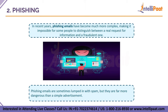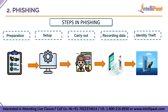Phishing consists of five steps: preparation, setup, carry out, recording the data, and identity theft. The first step is preparation or planning — the phisher must decide which businesses to target and how to obtain email addresses from those businesses' customers. The second step is setup — after deciding which firm to imitate and who their victims will be, they begin the setup process: fishers create communications to distribute them and collect data.